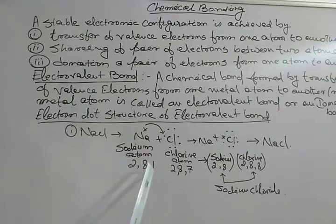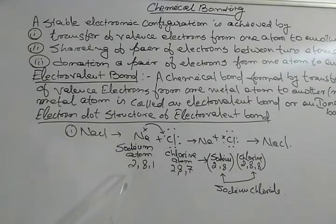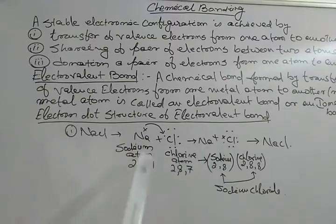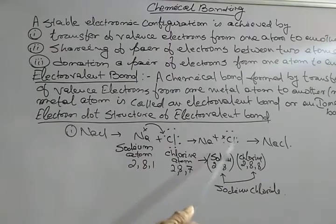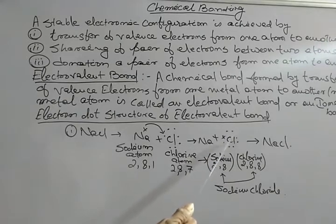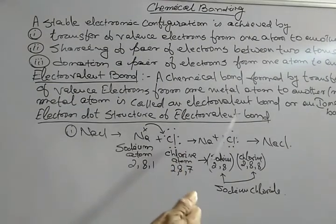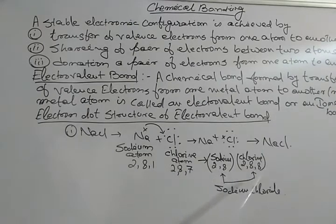Sodium has 11 electrons and 11 protons; chlorine has 17 electrons and 17 protons. When one electron transfers from sodium to chlorine, sodium's electron count decreases to 10 and it becomes a positive ion. Chlorine's electron count rises to 18 and it becomes a negative ion. Both atoms are now stable in their last shell, so they form a bond — this is sodium chloride, NaCl.